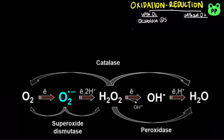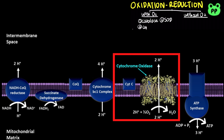Superoxide dismutase, or SOD, also protects the cell from oxidative damage by converting the superoxide radical, which is a byproduct of oxygen metabolism, into ordinary molecular oxygen and hydrogen peroxide, which is then converted to water and oxygen by catalase. Cytochrome C oxidase, also known as complex 4 of the electron transport chain in our mitochondria, reduces oxygen into water while using that free energy to pump protons into the intermembrane space, contributing to an electrochemical potential that can be used to synthesize ATP.